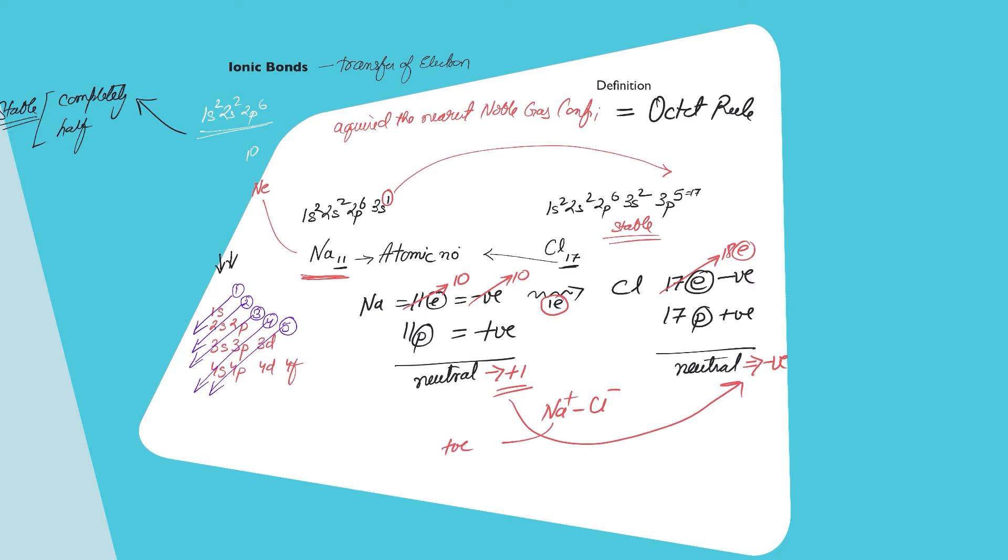A positive ion is called a cation, a negative ion is called an anion. So an ionic bond would be formed by attraction between the oppositely charged particles.